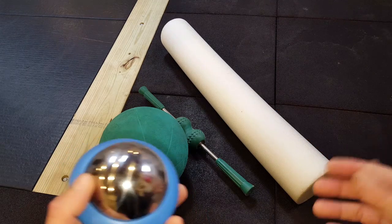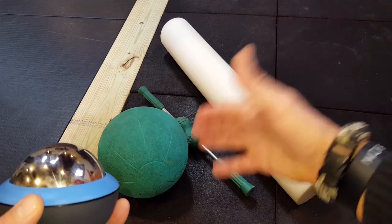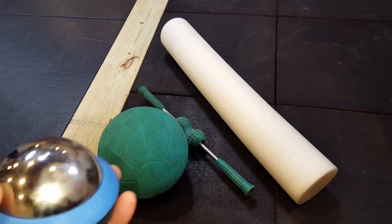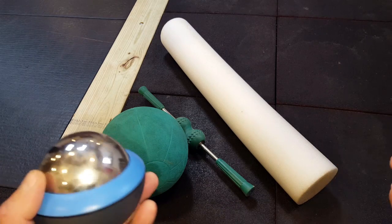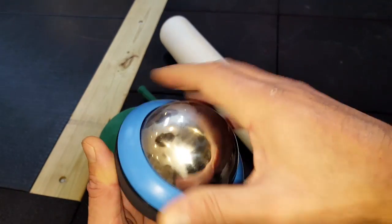As you begin to get comfortable with self-myofascial release, we start getting smaller and smaller and getting into balls and other smaller devices, all the way down to baseballs and tennis balls and even golf balls. And that's why this is a pretty good size as far as this stinger roller.